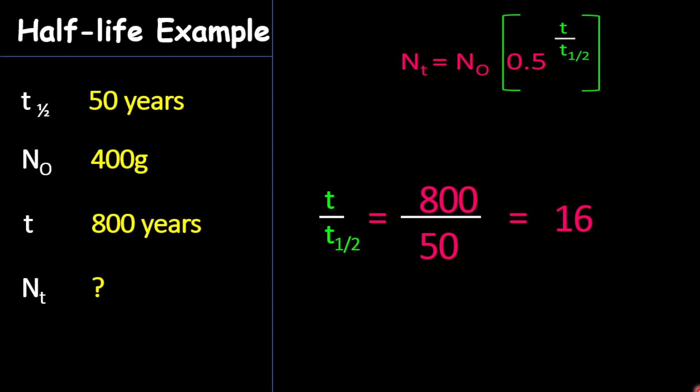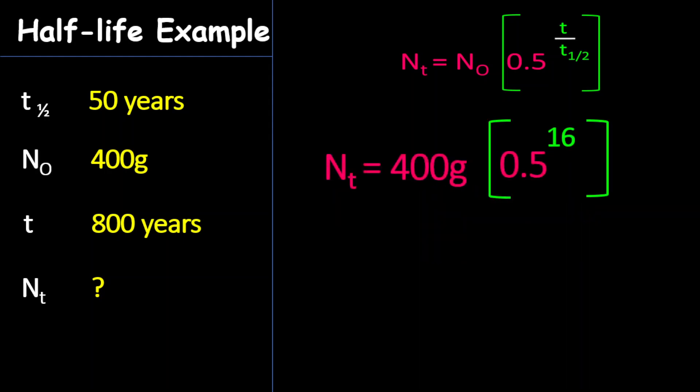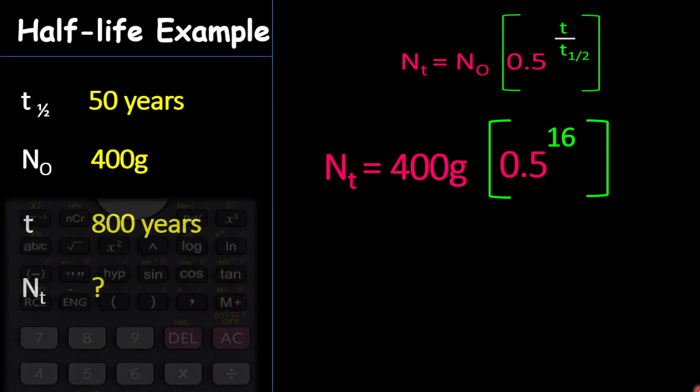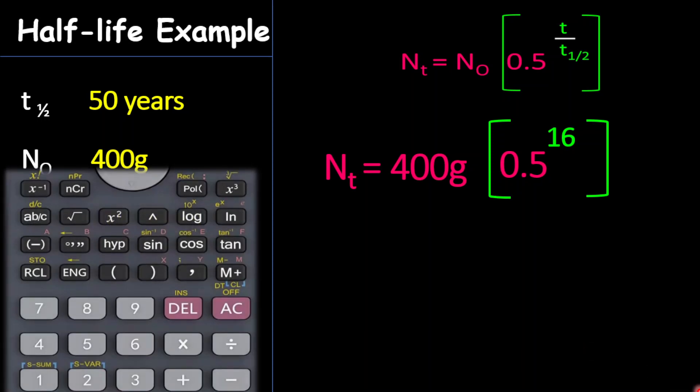Now, we're going to plug this into a formula. And so what we'll get now is, by substitution, is 400 grams, which is our original mass here, multiplied by 0.5 to the power of 16. Again, you plug this into a calculator using your special key, and so you press 0.5, then you press this special key, 16.